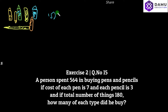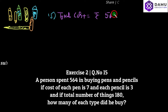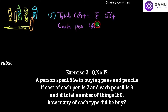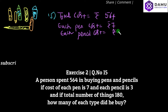The total cost he spent is 564 rupees. Each pen costs 7 rupees and each pencil costs 3 rupees. The total number of things he bought is 108.